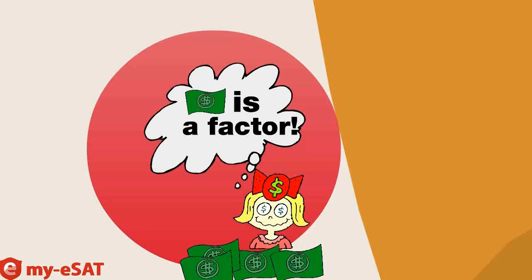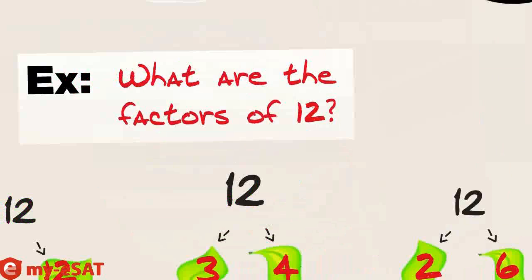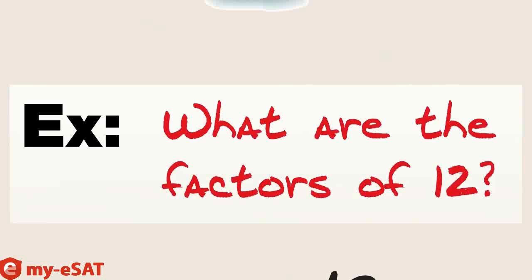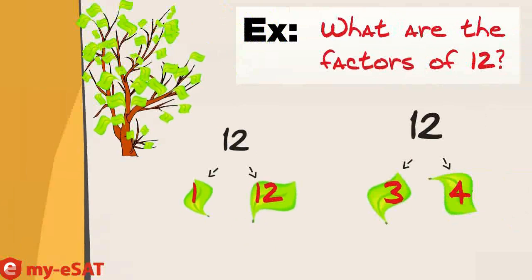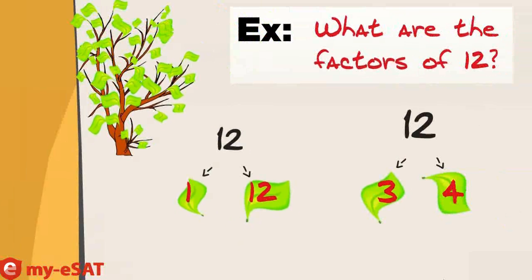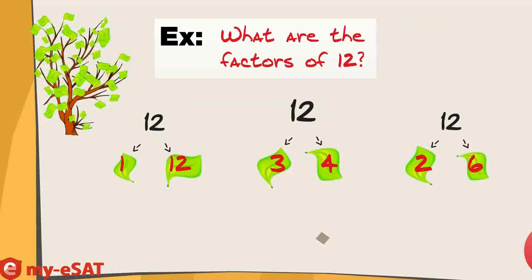For example, what are the factors of the number 12? Draw a factor tree as on the screen. Factors of 12 are 1 and 12, since 1 and 12 divide into 12 with no remainder. Also, factors are 3 and 4, as well as 6 and 2. So the factors of 12 are 1, 2, 3, 4, 6, and 12.